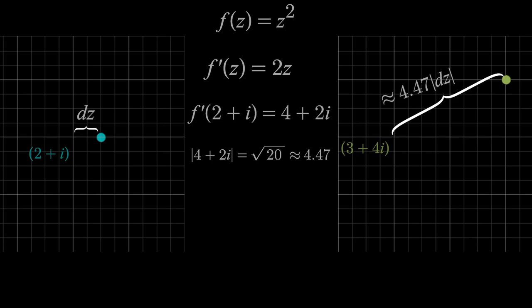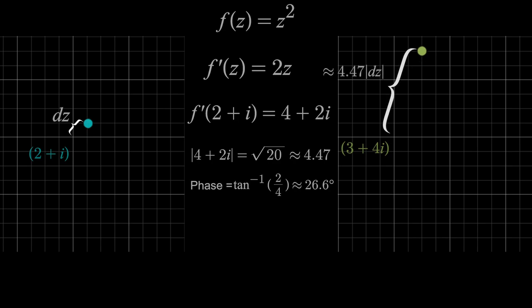That is the magnitude of the complex derivative. It's how far the point 4 plus 2i is from the origin. So that tells us, just like before, how much further the output moves compared to the input for any small change in any direction. Then if we call to the right 0 degrees, then the output moved at an angle of 26.6 degrees roughly relative to that, which is the phase of this complex number.